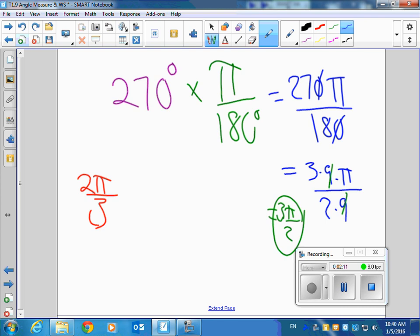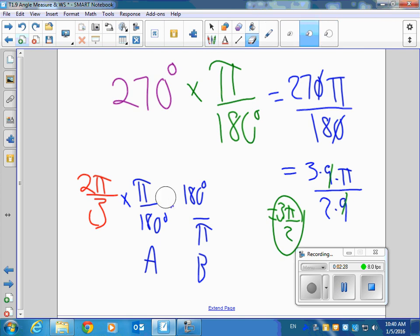So then you have two choices. You can multiply by pi over 180. Or you could multiply by 180 over pi. Which one seems to make a little more sense that it'll cancel out the pi's, A or B? B. So let's do it.